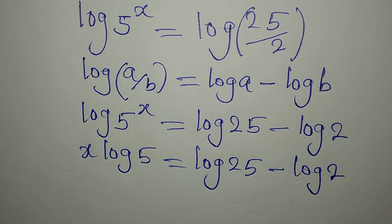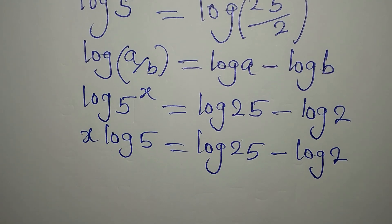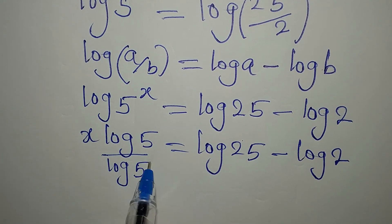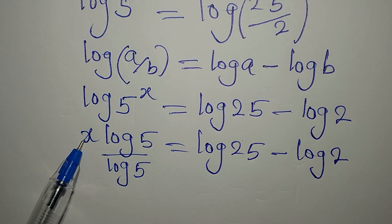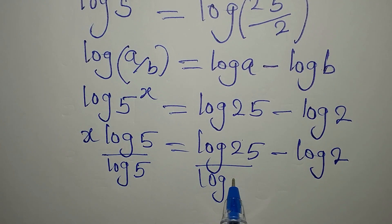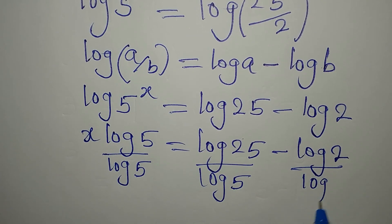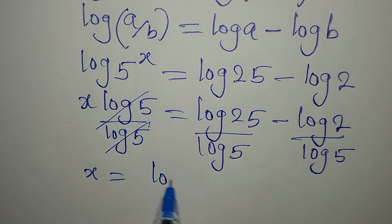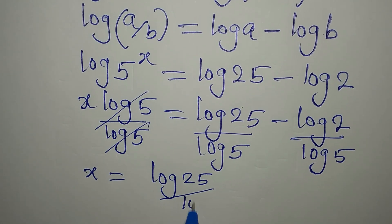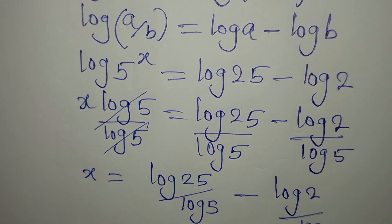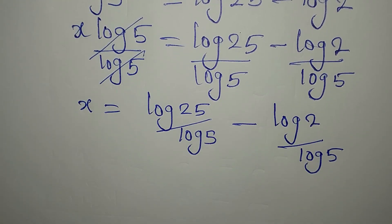The next thing is to divide both sides by log 5 — we do that so that x can be alone. Whatever you do on one side you do on the other side, so we divide this by log of 5 as well. This will isolate x, which will now be log 25 divided by log 5, minus log 2 divided by log 5.